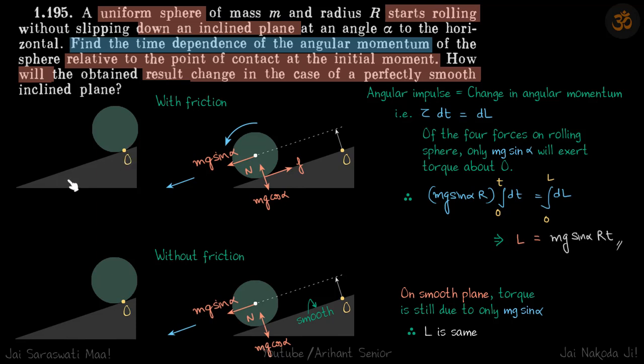Let's say this is our inclined plane and the sphere starts to roll from point O. We need to find the angular momentum of this sphere with respect to point O after time t.